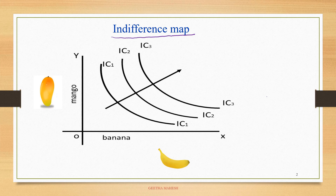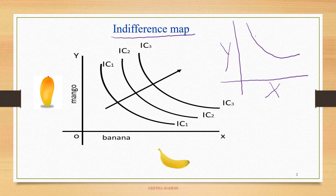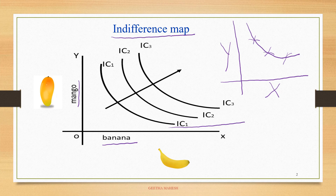Before we take up an indifference map, what do you mean by indifference curve? Indifference curve is a graphical representation of two goods which gives the same level of satisfaction. That means any combination which lies on an indifference curve will give the same level of satisfaction. When we ask a consumer to make a combination of two goods — here we have taken banana and mango — and those combinations are graphically represented, then we get a set of indifference curves.